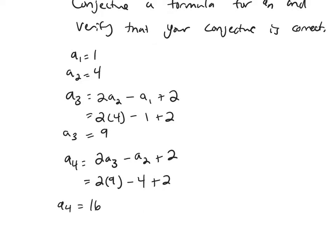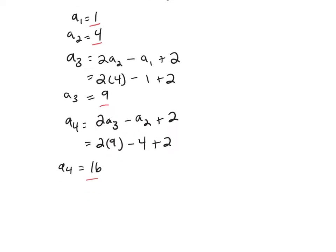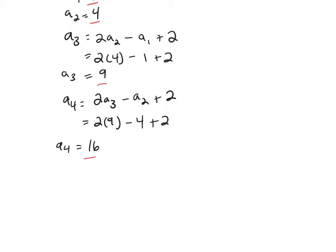So let's stop and see if we notice a pattern. Our first number was 1, 4, 9, and 16. Those are all perfect squares. So our conjecture for our formula for a_n would be that a_n is n².